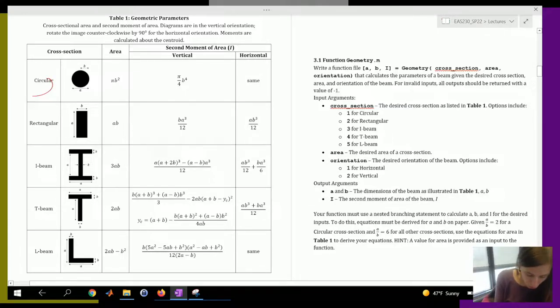So here's your cross section: circle, rectangle, I-beam, T-beam, L-beam, and orientation - so vertical or horizontal.